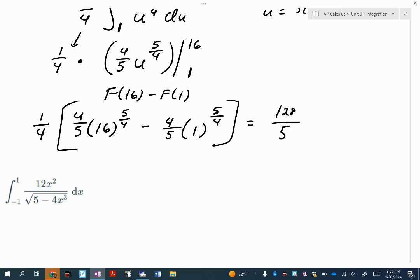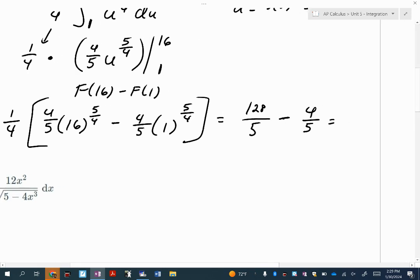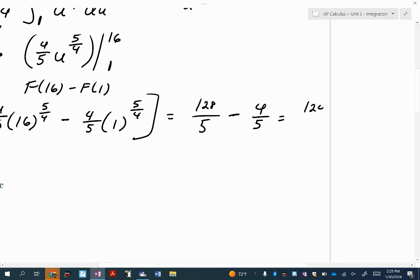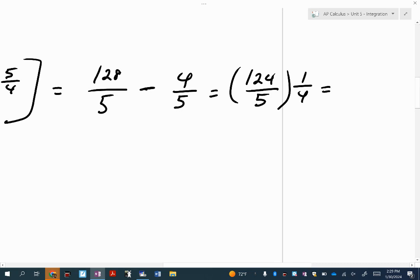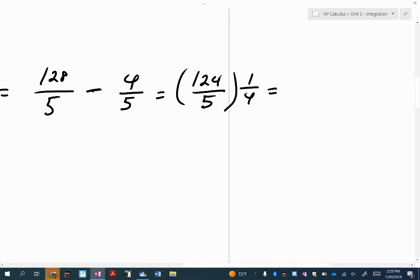No, I'm not done. This one's going to be a lot easier. Anything where it says one to a power is just one. The fourth root of one is one. One to the fifth power is one. And then what is one times four-fifths? Four-fifths. So subtract. What do you get? But is this my answer? No. Don't forget. You need to multiply this by one-fourth. Do you know what one-twenty-four over four reduces to? What's twelve divided by four? Three. And four divided by four is one. So the answer is thirty-one-fifths.